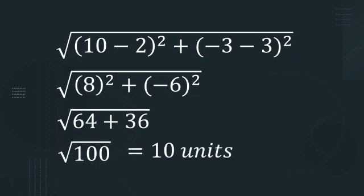Square root of 100 is 10 units. So the distance between the points A and B is 10 units.